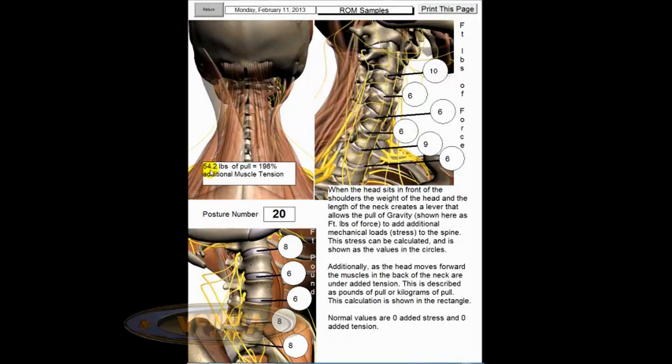In this case, we have 54.2 pounds of pull, and that relates to almost a 200% additional muscle tension based on this person's posture number, which is shown here as 20.